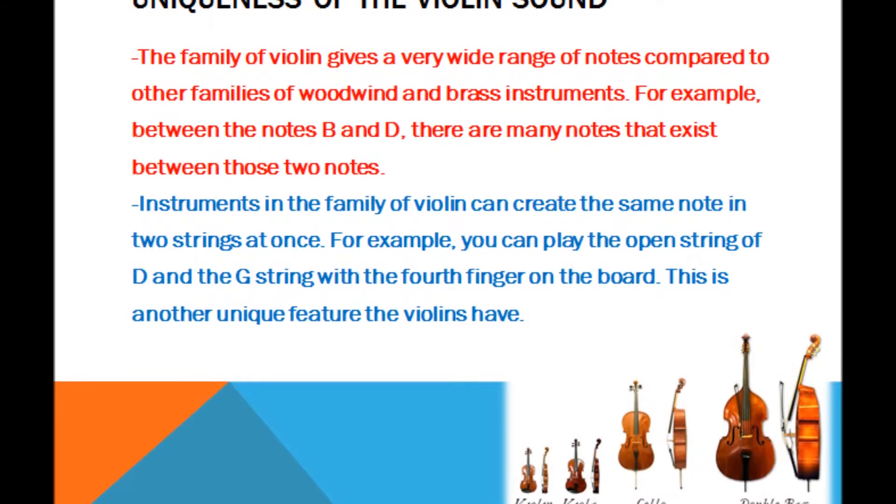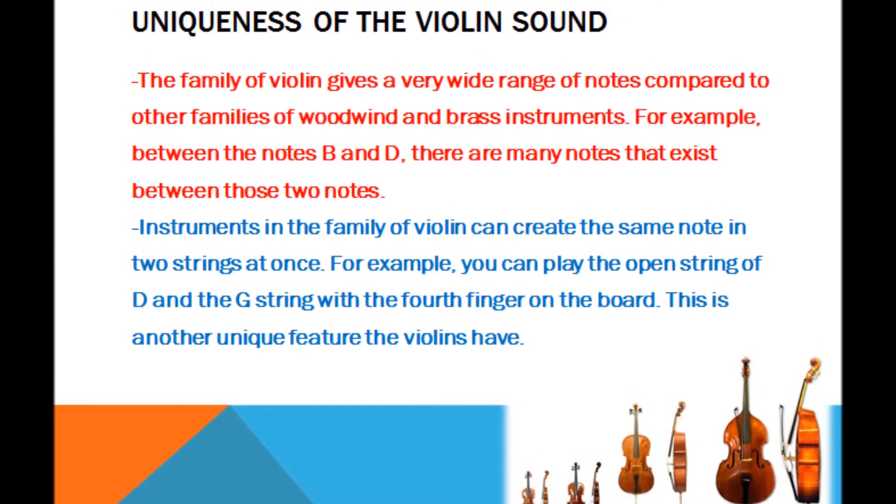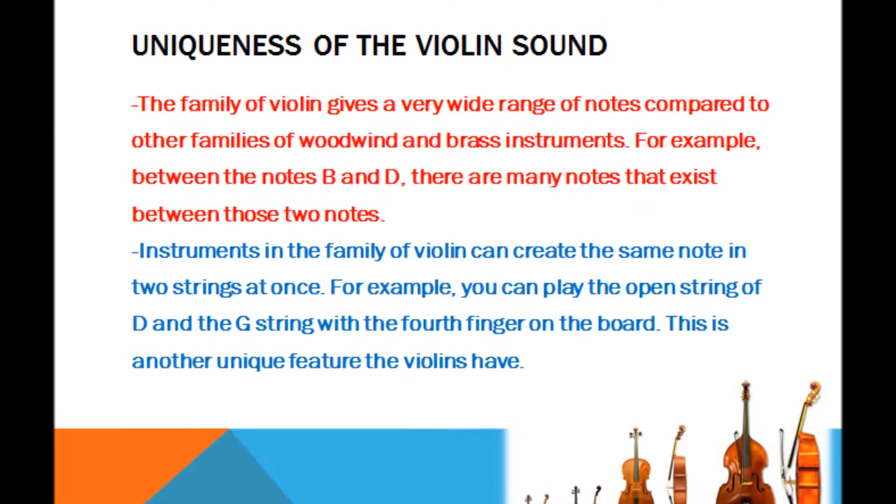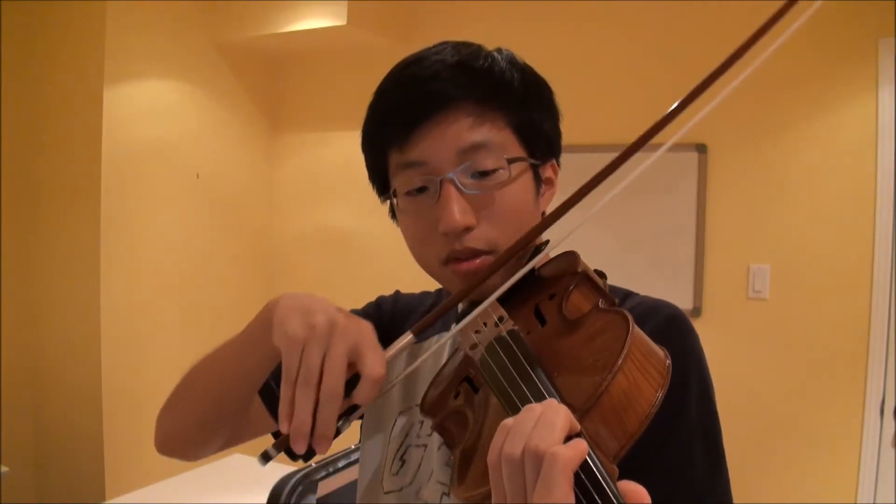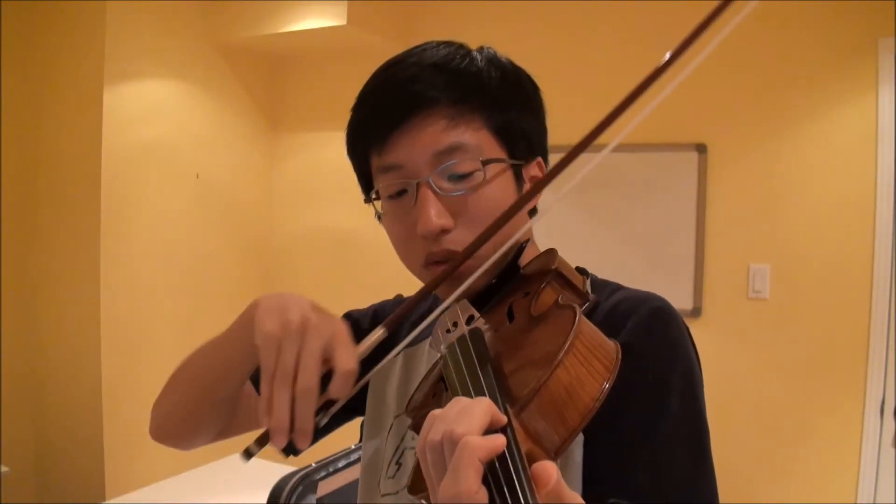Another unique feature the violin has is that violinists can create the same note on two strings at once. For example, you can play the open string of D and use the second or fourth finger on the G string, which is also D. Comparing one string and two strings, playing with two strings at once is definitely louder.